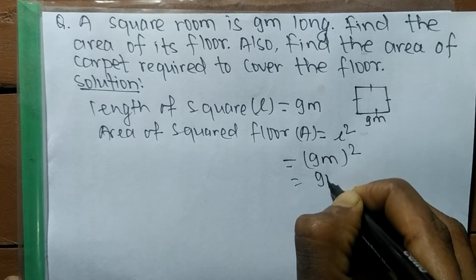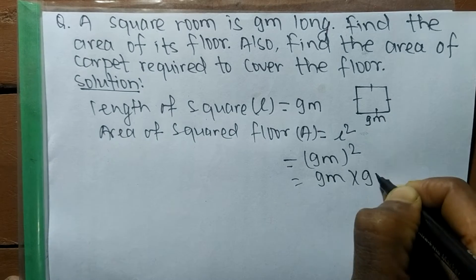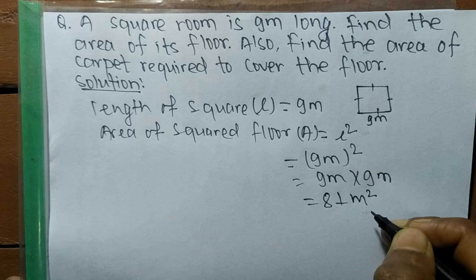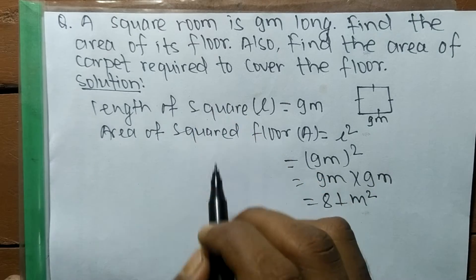9 meters squared means it is 9 meters times 9 meters, so it is equal to 81 square meters, which is the area of the floor.